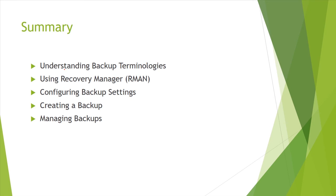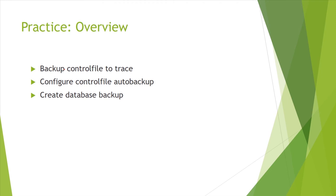In summary, this chapter covered backup terminologies: whole vs. partial backup, backup types (full, incremental level zero, incremental level one cumulative and differential), backup modes (hot vs. cold), and image copy vs. backup set. We also discussed RMAN as the main backup tool, configuring backup settings, creating backups with the backup command, and managing backups with the list command. In the practice session, we will back up the control file to trace, configure control file autobackup on, and create a database backup.